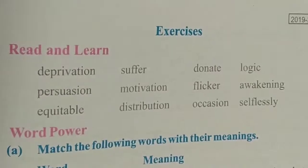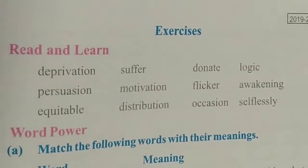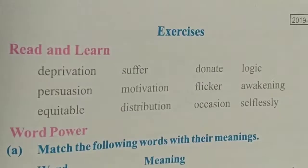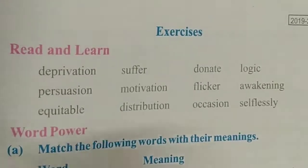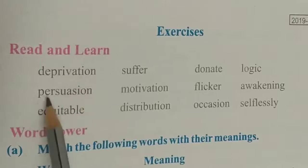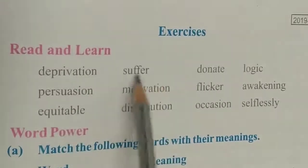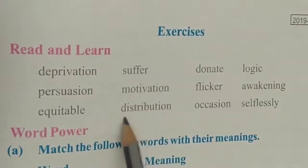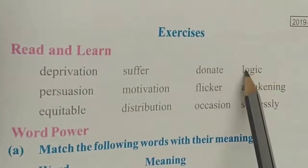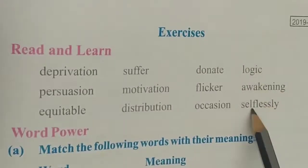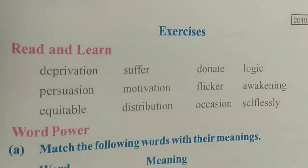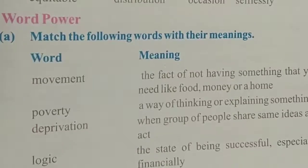From lesson number 13, in the previous video we understood the lesson's reading and explanation. Today we will do the exercise of that lesson. First is 'Read and Learn.' The words are: deprivation, persuasion, equitable, suffer, motivation, distribution, donate, flicker, occasion, logic, awakening, selflessly. All of you have to read these words and learn them.